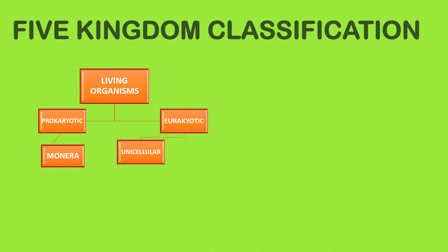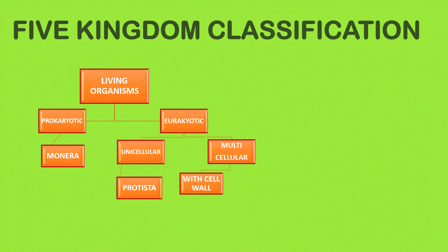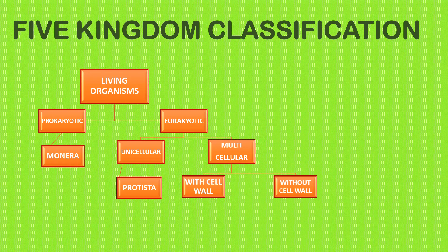Eukaryotic organisms are divided into unicellular and multicellular organisms. Unicellular is made of only one cell and multicellular is made up of thousands of cells. Those organisms that have eukaryotic but unicellular cells belong to the kingdom Protista, and the multicellular are further divided into cells with a cell wall and those without a cell wall.